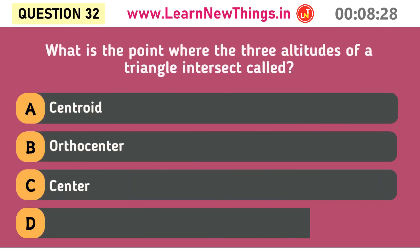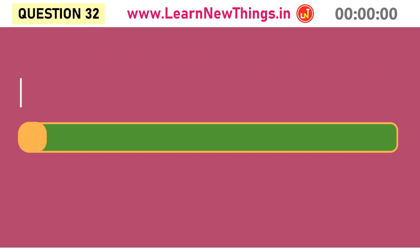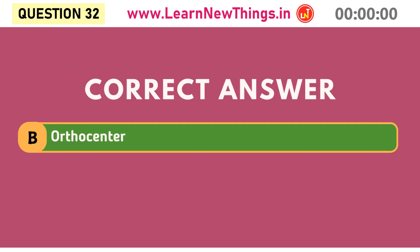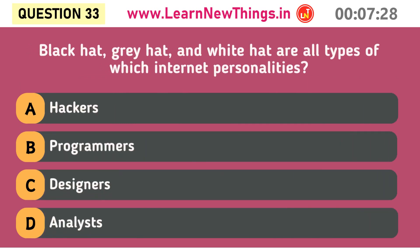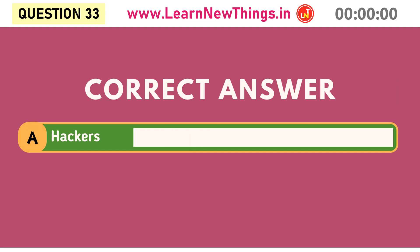What is the point where the three altitudes of a triangle intersect called? Orthocentre. Black hat, gray hat, and white hat are all types of which internet personalities? Hackers.